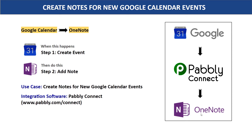Here you have two choices. The first choice is to copy all the details of the event from Google Calendar, sort it out, and manually create a note in OneNote. The problem with this approach is it's very repetitive and tiresome, considering you will be scheduling many events in Google Calendar. I would suggest bringing in some automation so that whenever a new event is created in Google Calendar, it automatically adds a note in OneNote.